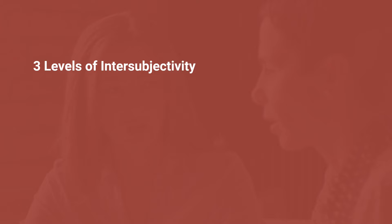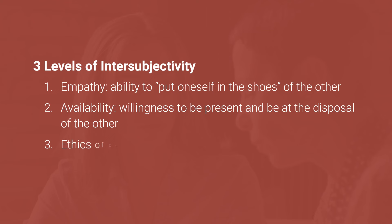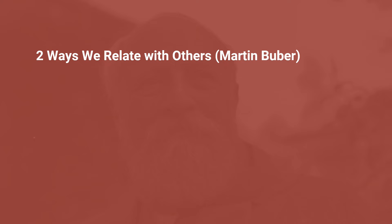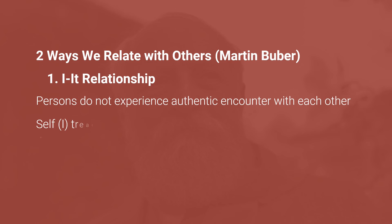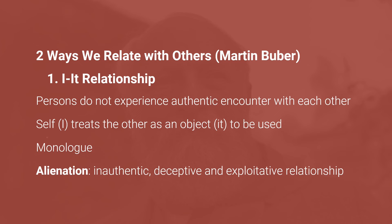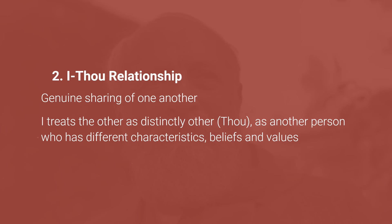Intersubjectivity has three levels: empathy, or the ability to put oneself in the shoes of the other; availability, or the willingness to be present and be at the disposal of the other; and ethics of care, or the moral obligation to respond to the needs of the other. Martin Buber presented two influential ways on how we relate with others: the I-it and the I-thou relationship. In the I-it relationship, human persons do not experience an authentic encounter, because the self treats the other as an object — it is a monologue and results in alienation. In the I-thou relationship, on the other hand, there is a genuine sharing of one another, where the I treats the other as distinctly other, as another person with different characteristics, beliefs and values — it is a dialogue, a genuine form of interaction.